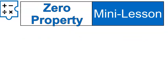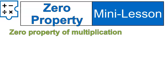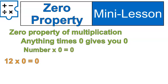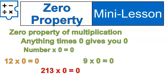The easiest property with multiplying to remember, by far, is the zero property of multiplication. This is straightforward because it literally means you multiply times zero. Anything times zero gives you zero. We can write this as: a number times zero equals zero. So, twelve times zero equals zero, nine times zero equals zero, 213 times zero equals zero, sixty-four times zero equals zero. This is the zero property.